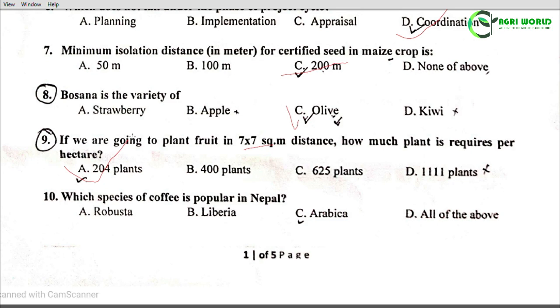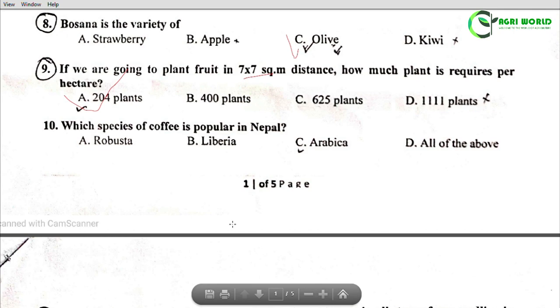Question 10: Which species of coffee is popular in Nepal? Options: Robusta, Liberia, Arabica, All of the above. The correct answer is Option C: Arabica.